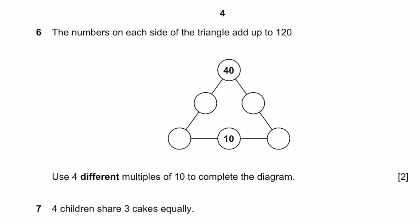Question 6. The numbers on each side of the triangle add up to 120. Use 4 different multiples of 10 to complete the diagram. So we can say 40 and we add 20 and 60. And then 60 plus 10 plus 50. And then 50 plus 30 plus 40. 120, 120, 120.